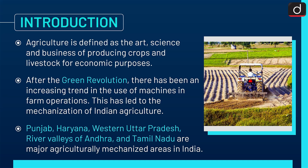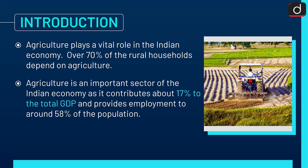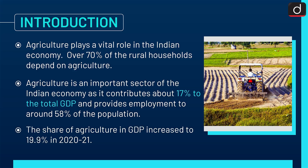Punjab, Haryana, West Uttar Pradesh, river valleys of Andhra, and Tamil Nadu are major agriculturally mechanized areas in India. Agriculture plays a vital role in the Indian economy — over 70% of rural households depend on it. It contributes about 17% to total GDP and provides employment to around 58% of the population. The share of agriculture in GDP increased to 19.9% in 2020-21.